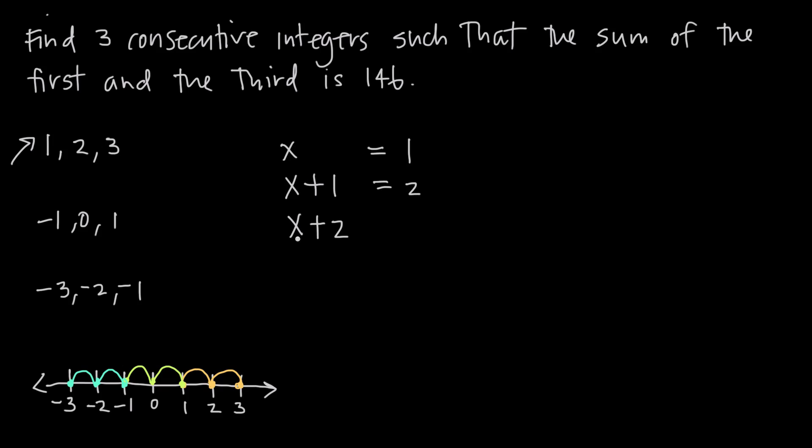Plugging in 1 for x here, we get 1. Plugging 1 in for x here, we get 1 plus 1 is 2. And plugging 1 in for x here, we get 1 plus 2 equals 3. We can see we get three consecutive integers: 1, 2, and 3. So we're representing these consecutive integers as x, x plus 1, and x plus 2. This is our first integer, our second integer, and our third integer.